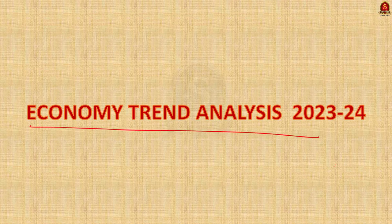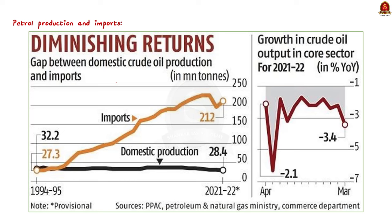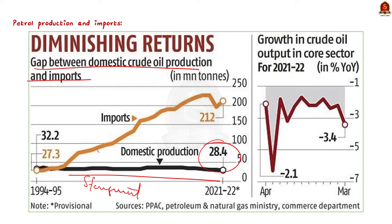Understanding macroeconomic trends of India is very important for UPSC Prelims 2024. Regarding petroleum production and imports, domestic crude oil production is stagnating at 28.4 million tons as per 2021-22 data, whereas imports in the same year were 212 million tons. India's domestic crude oil production has declined steadily since 2011-12.